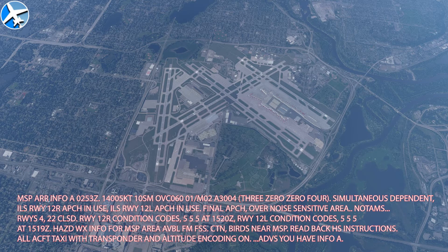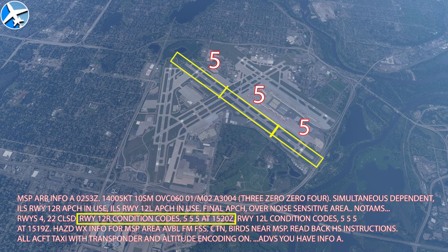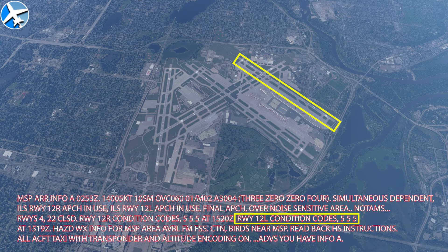The ATIS also gives us information on airport NOTAMs — in this case runway 4 and 22 are closed. We're also given a runway condition code of 5, 5, and 5 for runway 12 right. The runway is divided into thirds and each section gets a braking report. A 6 means a dry runway with good braking; a 0 means a slick runway with essentially no braking effectiveness. Runway 12 left would be identical to 12 right.